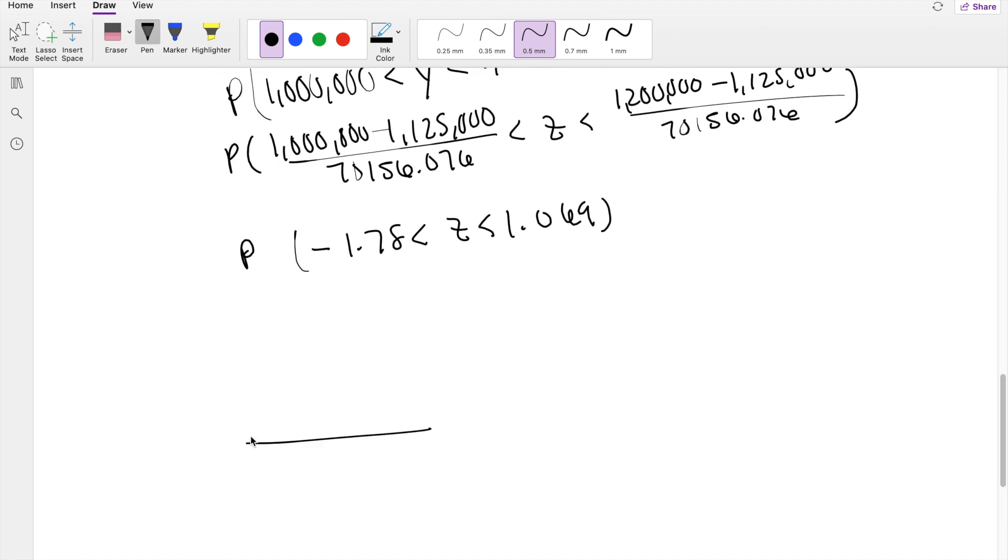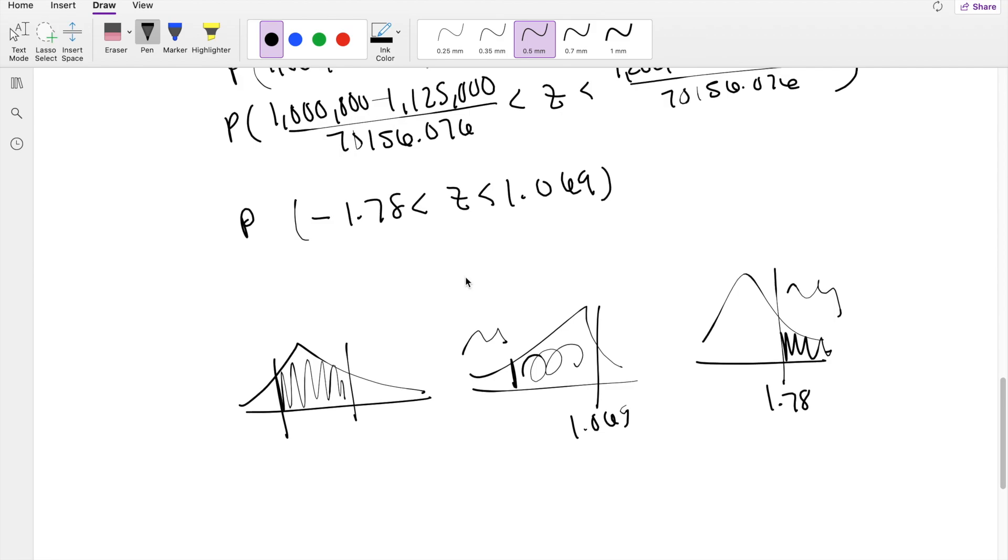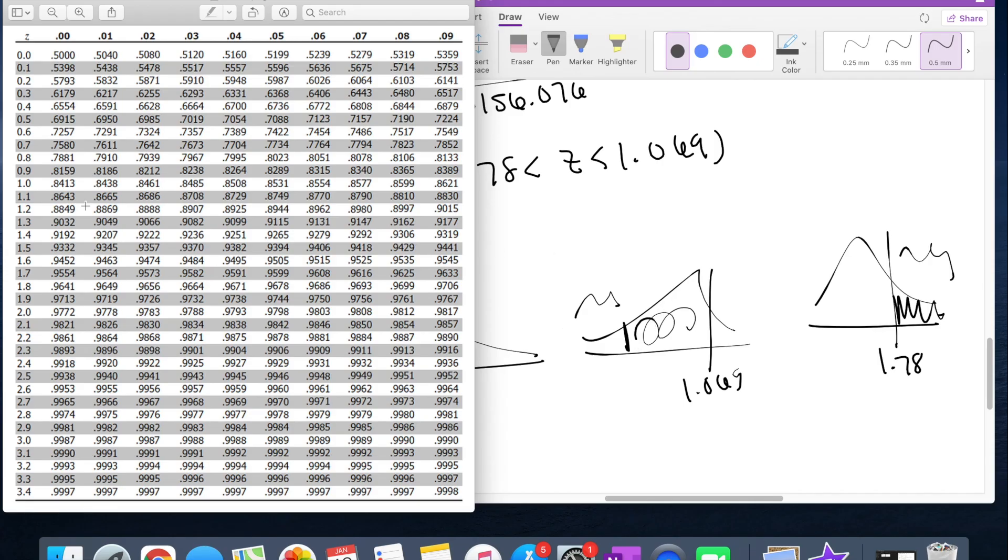If we pull up the z-table and they give you the CDF of positive side, we're looking for between these, we have to take the CDF of 1.069 and then subtract the little bit here. They give you a positive side, so we look at 1.78. Subtract that bit, because this area right here is the same as this area. So we get the area that we want, which is this in center.